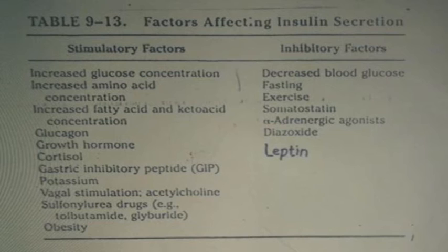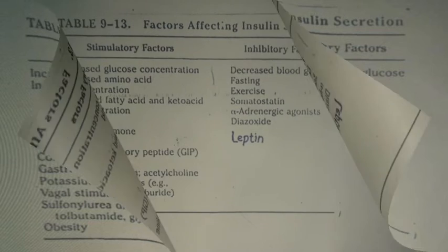Inhibitory factors, you know, decreased blood glucose level, fasting, exercise, somatostatin, alpha-adrenergic agonists, leptin. Leptin is a hormone produced by the adipocytes.